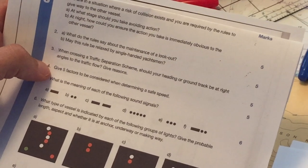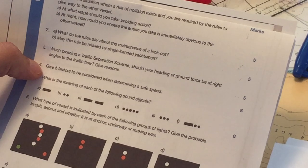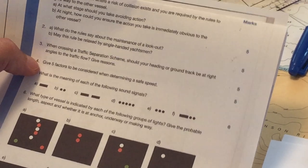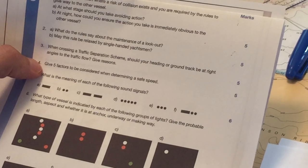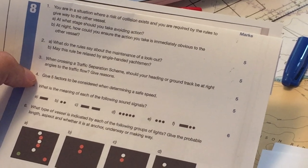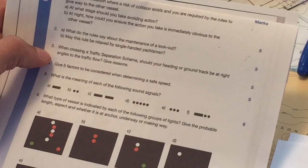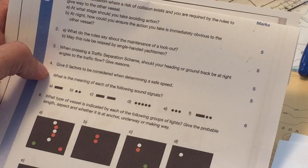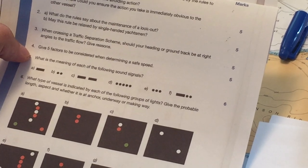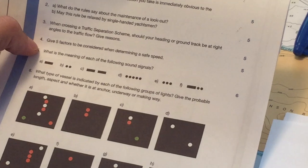Give five factors to be considered when determining safe speed. Traffic density. The presence of background lights on shore, coming from shore lights. The maneuverability of your vessel in terms of its stopping distance and its turning radius. That's three, right? One, two, three. Your draft in relation to available water. And what else? Save speed, save speed. The state of the sea in terms of wind, currents, wave height. Yeah, that's five there, right?